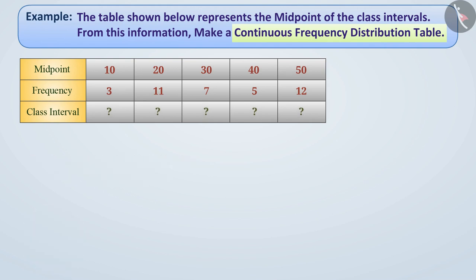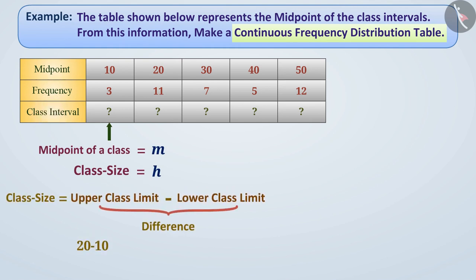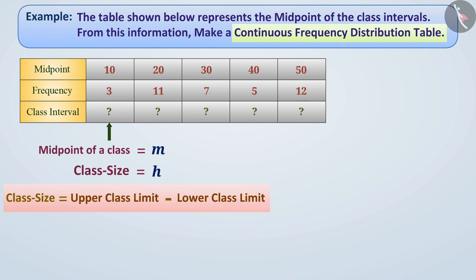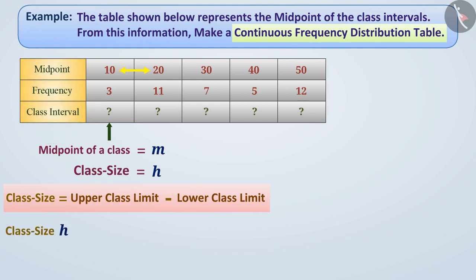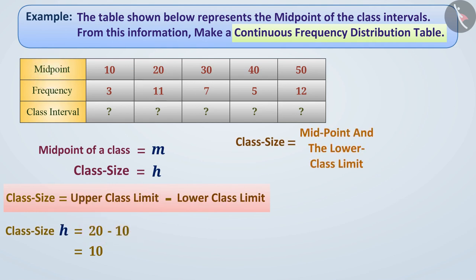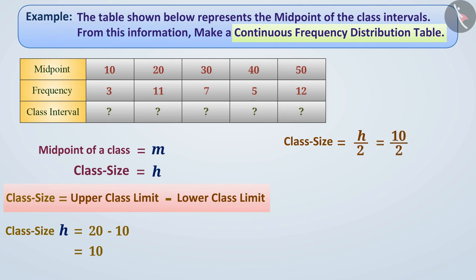Let us tell. Suppose the midpoint of a class is m and the class size is h. The difference in the upper class limit and lower class limit of the class interval is called its class size. Since the midpoint is between the middle of class intervals, the difference between any two consecutive midpoints will have the same difference as the difference between a lower and upper class limit of a class interval. In this way, we find the class size h by the difference of consecutive midpoints, which is 20 minus 10 equal to 10. Reducing this difference to half the class size gives h divided by 2 equal to 10 divided by 2 equal to 5.